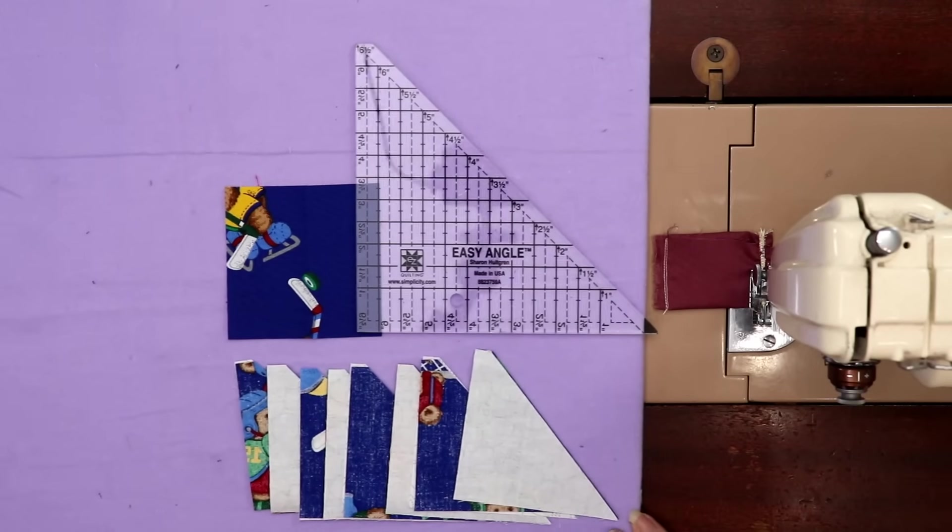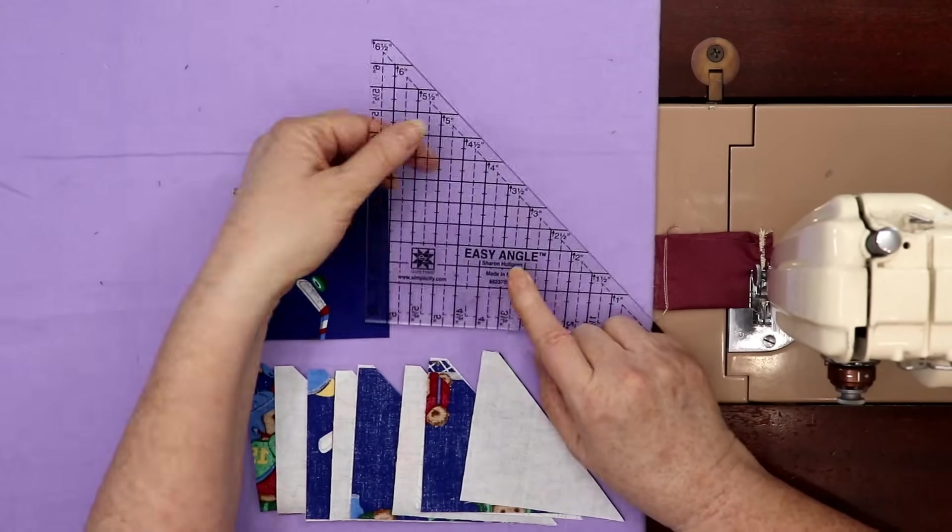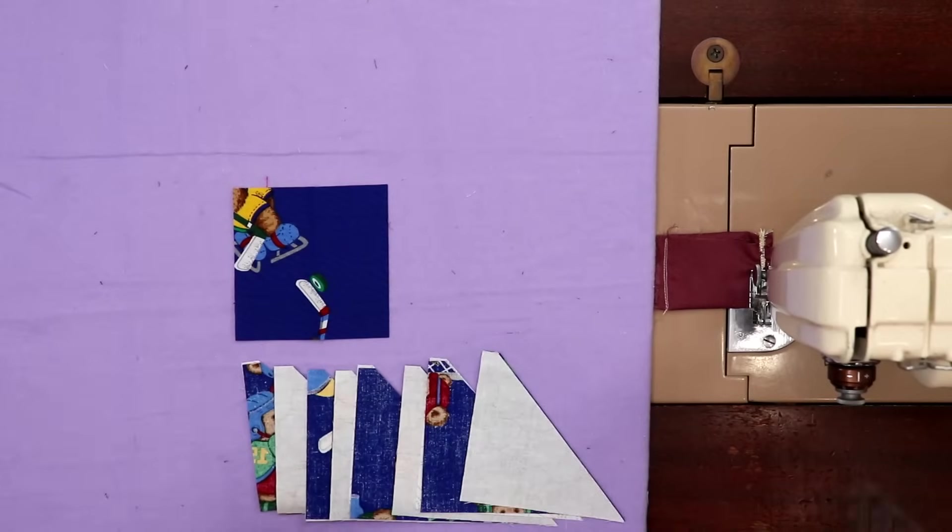Okay. So we're at the sewing machine now. This is the ruler we used. And I'm going to show you how to put these together.